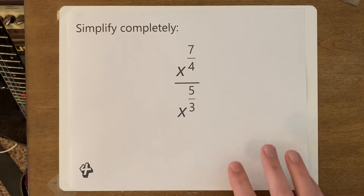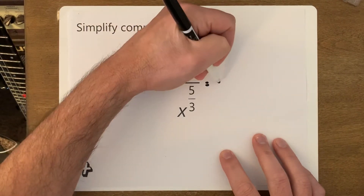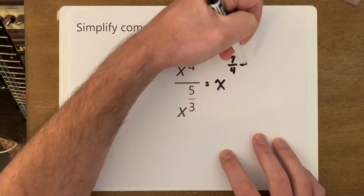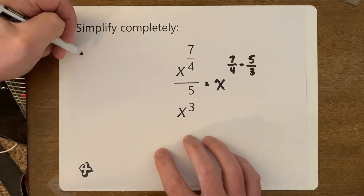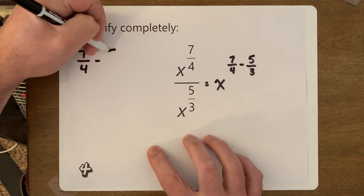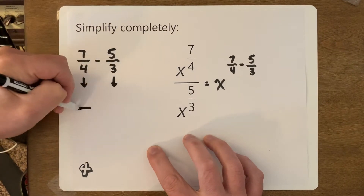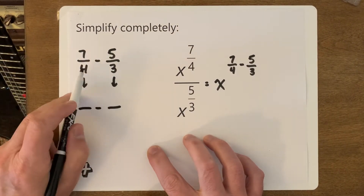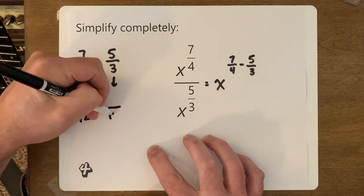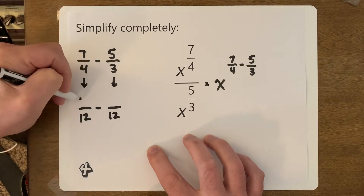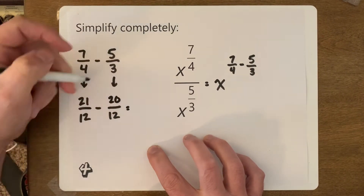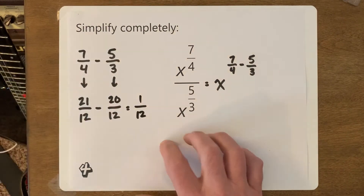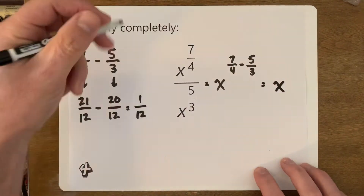Here's one where we have two fractions and we're going to subtract them: x to the seven over four minus five over three. We need to get a common denominator. Four times three is 12. Seven times three is 21, and five times four is 20. So we get 21 take away 20 is 1 over 12. Our final answer would be x to the 1 over 12.